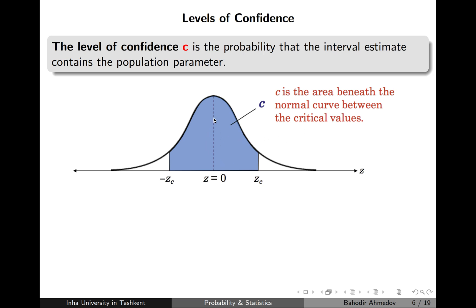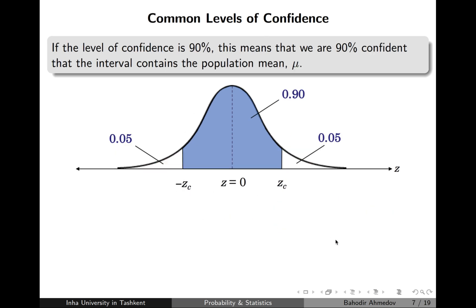The area under the normal curve equals c, and depending on how confident I want to be, I define the interval. For example, for 90% confidence, the two tail areas are each 0.05 because the total area under the normal curve is 1. So a 90% confidence level means I'm confident that the population mean is in the interval between minus z and plus z, or equivalently, the probability that the population mean is in that interval equals 0.9.